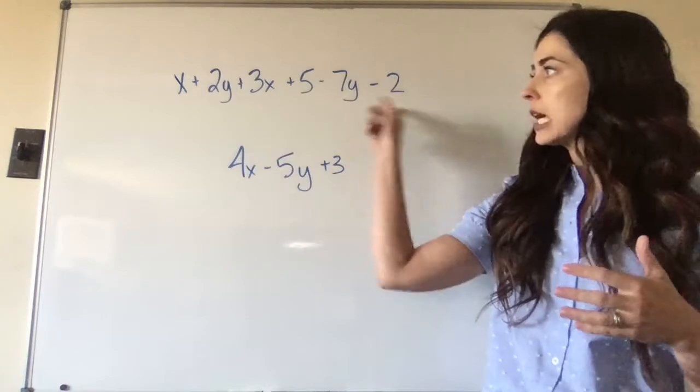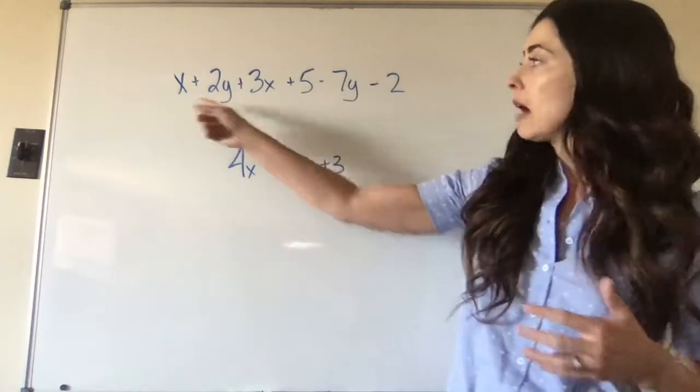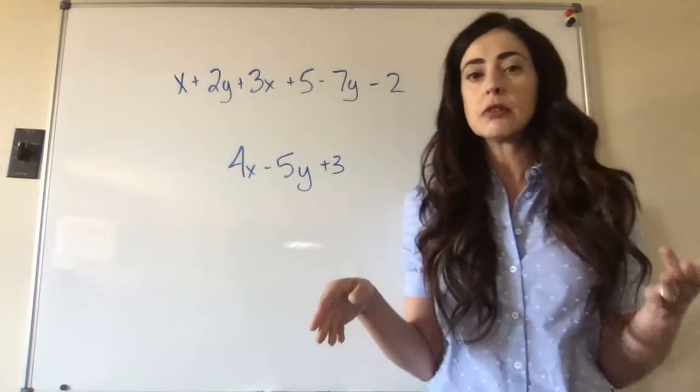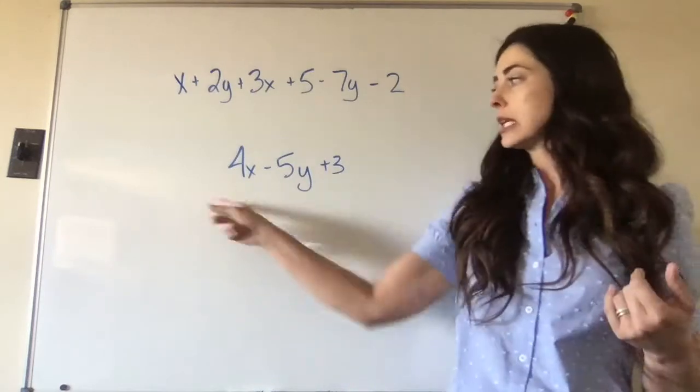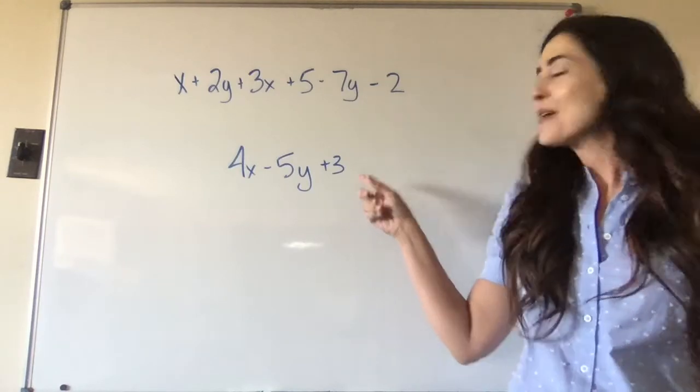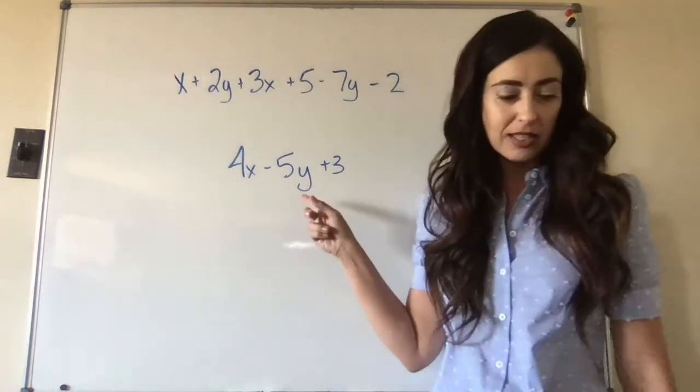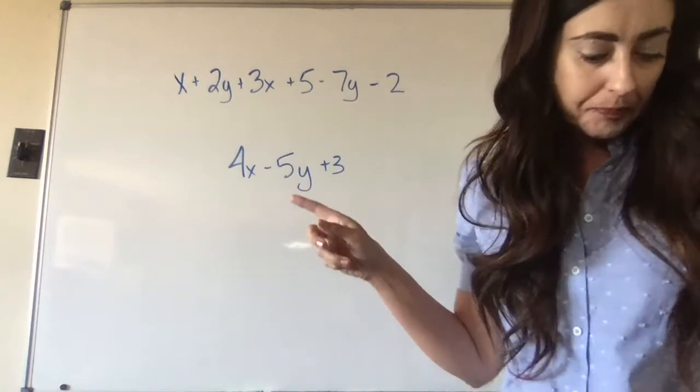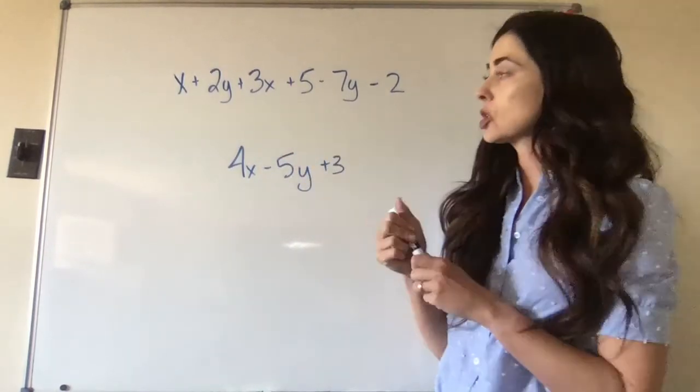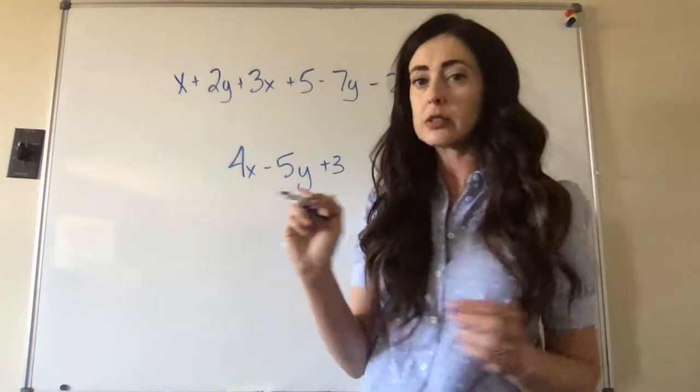So if you look at this expression, we have x's, x's, y's, y's, and constants. So this one could be simplified greater, whereas this one only has x's, y's, and a constant or a term of the whole number 3. So you cannot simplify this term anymore. So if we were going to simplify this term, what I like to do is bring colors into it.